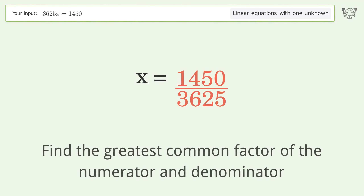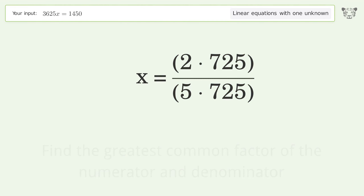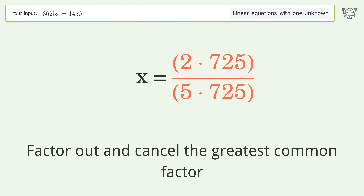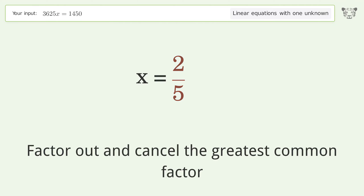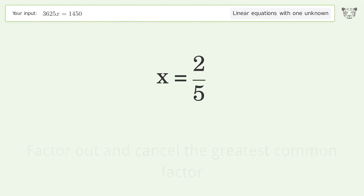Find the greatest common factor of the numerator and denominator. Factor out and cancel the greatest common factor. The final result is x equals 2 over 5.